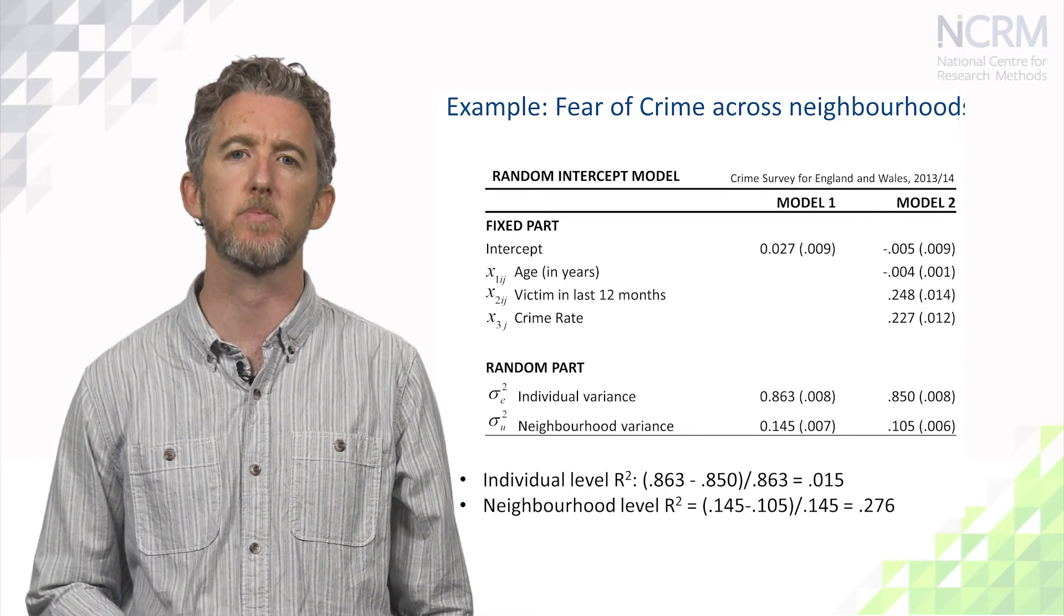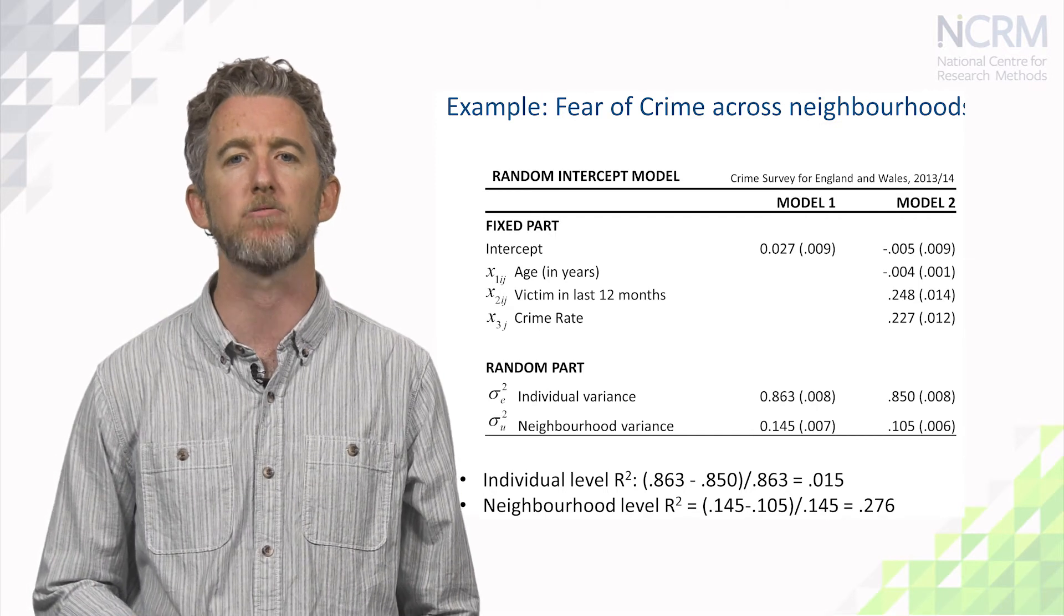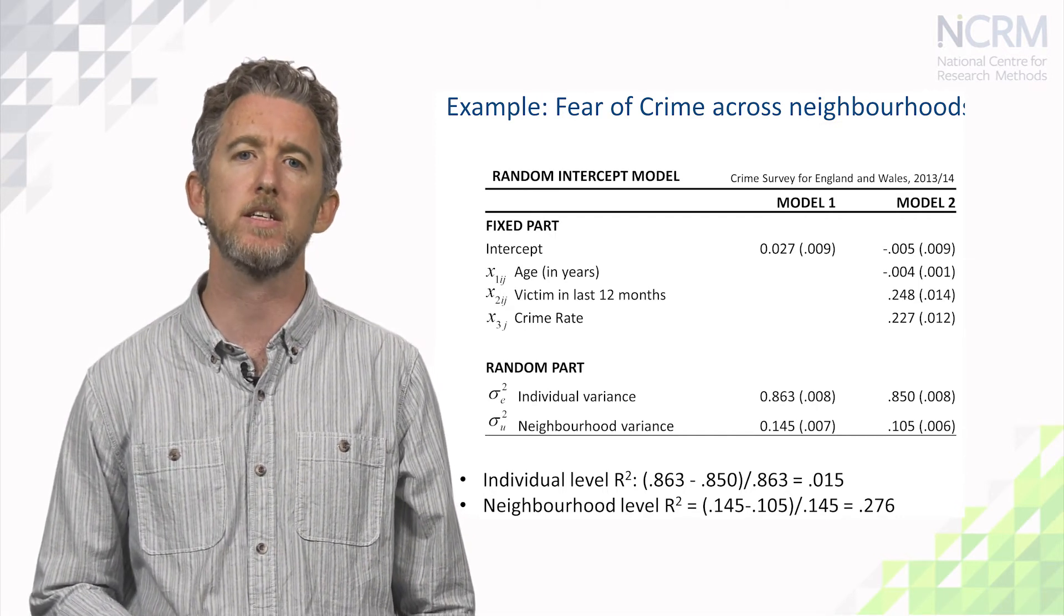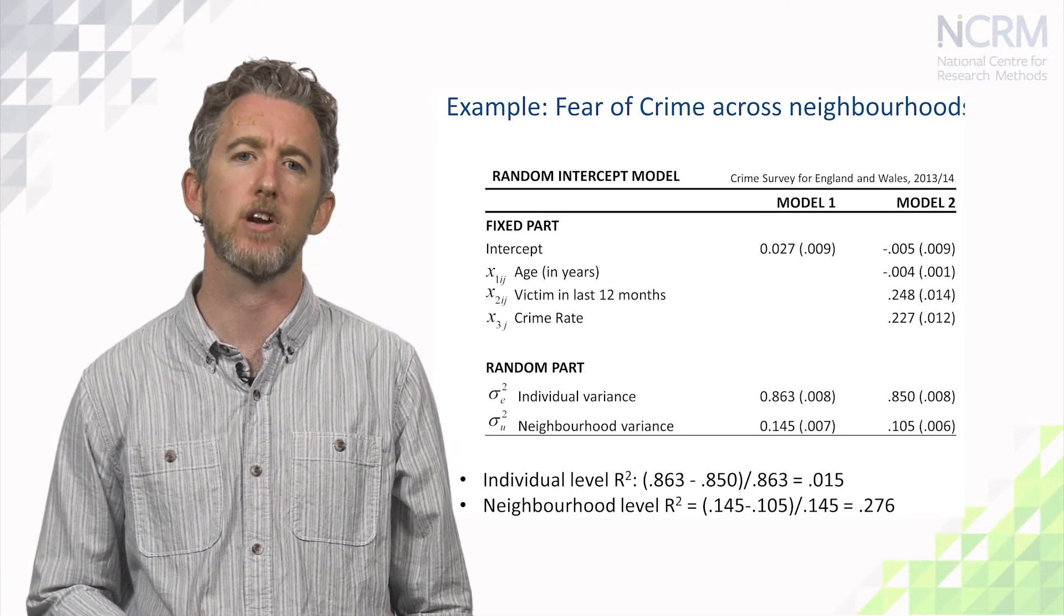Having accounted for these three explanatory variables, we see a reduction in the variability at the individual and group levels. We consider these to be approximate r-squares by considering the reductions in variance at each level.